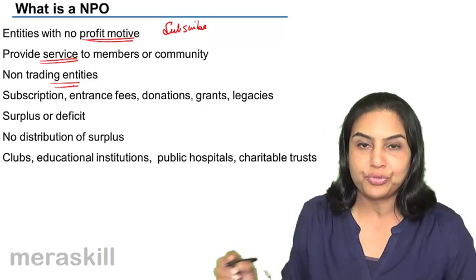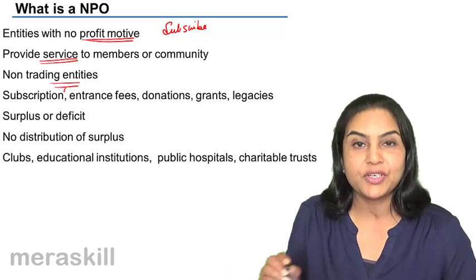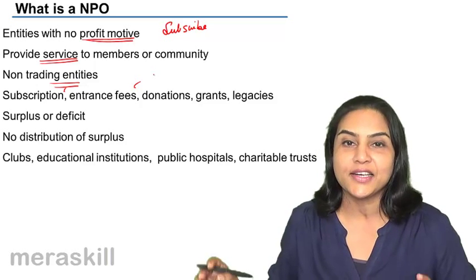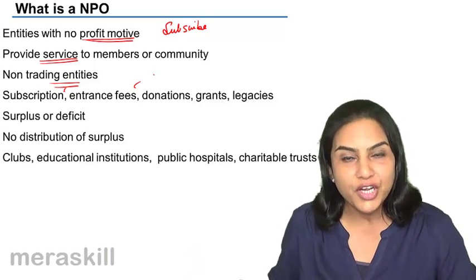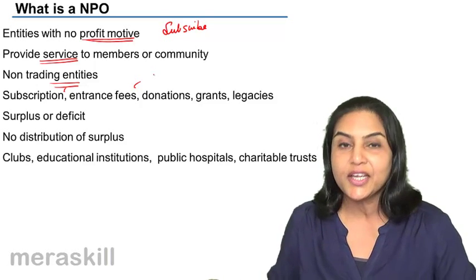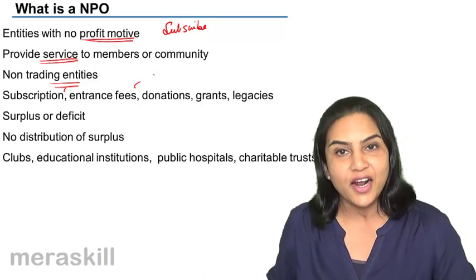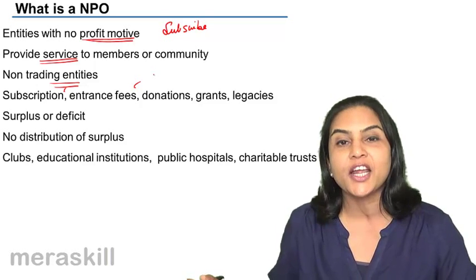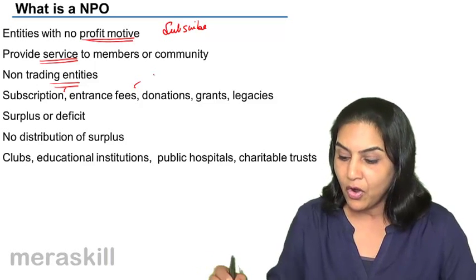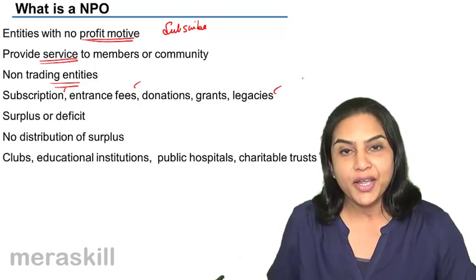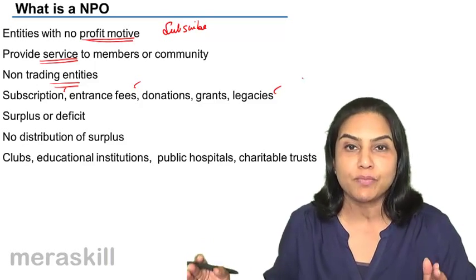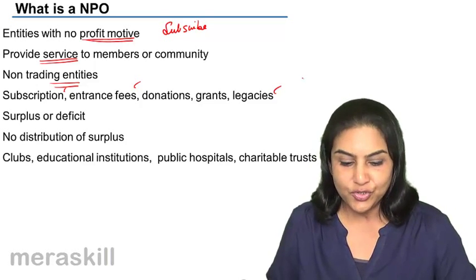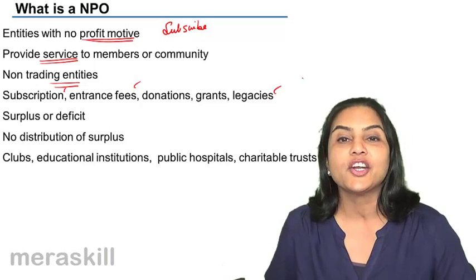The sources of income for a not-for-profit organization are usually: subscription (yearly or monthly), entrance fee paid when you join, donations from interested societies or corporates, government grants or subsidies to run a library, public hospital, or public school, and legacies — where somebody by will bequeaths money, funds, books, or a collection to the organization. These are the sources from which revenue is earned by a not-for-profit organization.